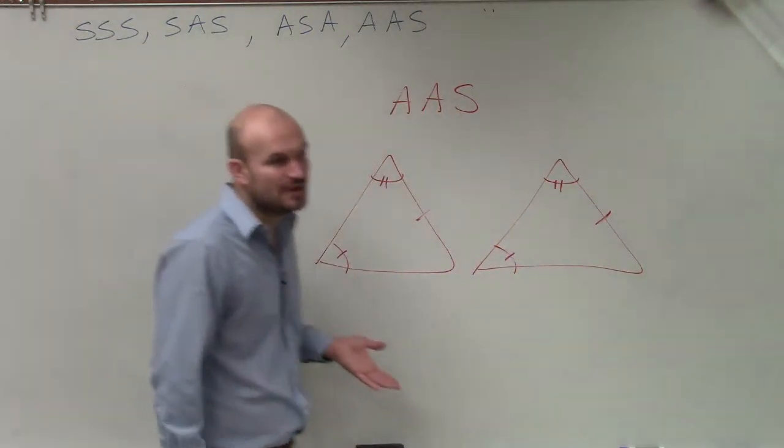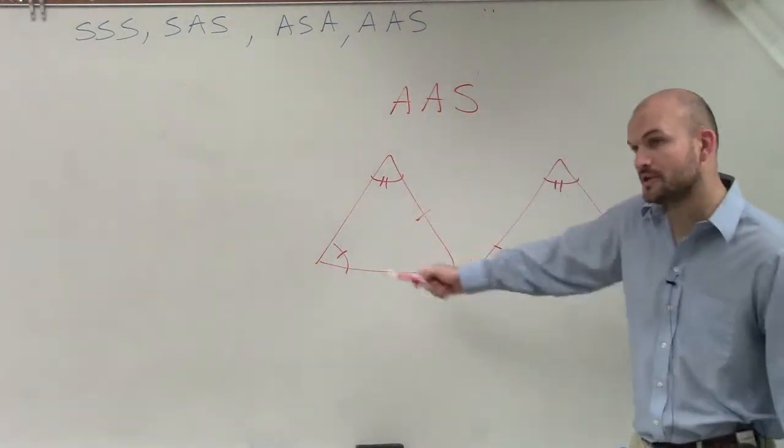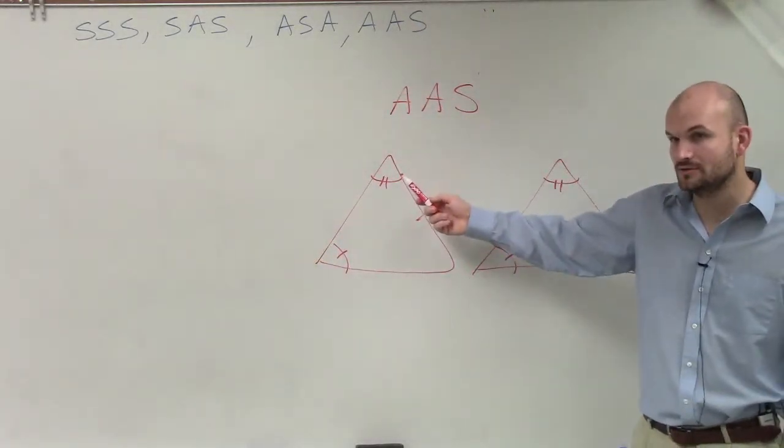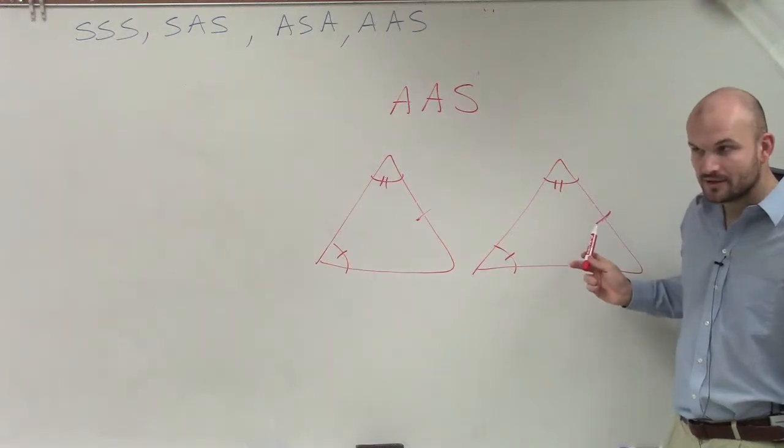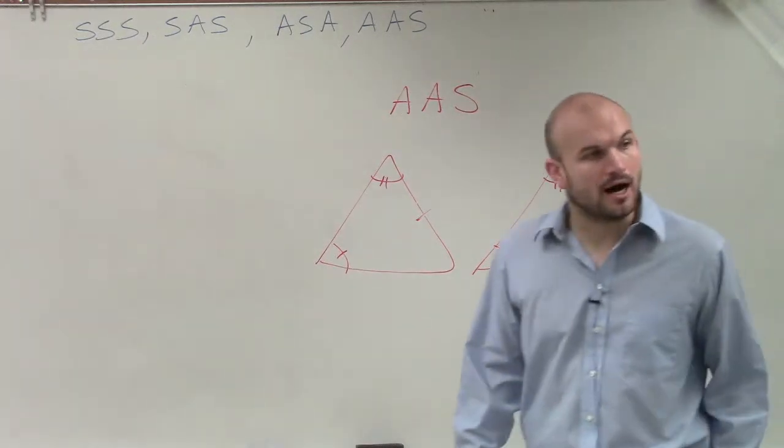if we have two triangles that have similar angles, we go from angle to angle to side, they are then going to be congruent.